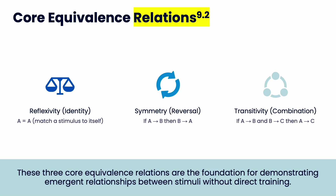Symmetry is a reversal — it's when you match A to B. So if you have a picture of a butterfly and match it to the word butterfly, you can match that back and forth. When you see the word butterfly you match it to the picture of the butterfly, and when you see the picture of the butterfly you match it to the word butterfly.